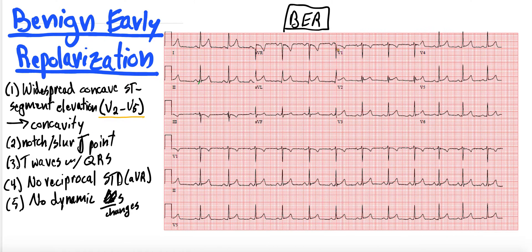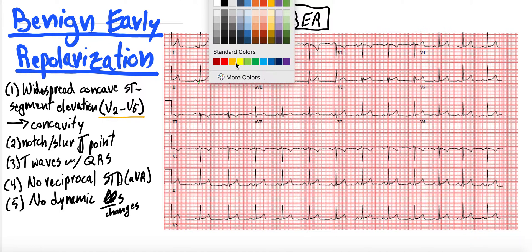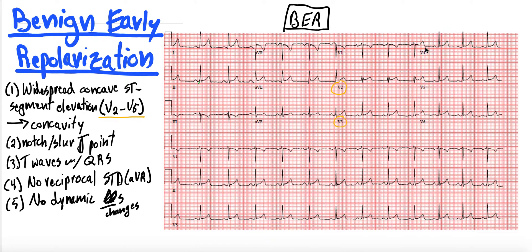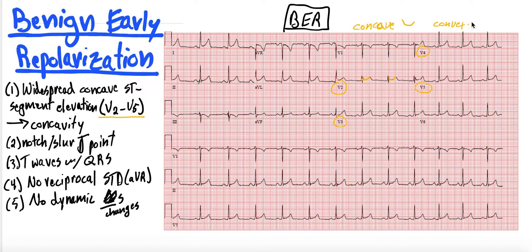We look at our criteria. Is there widespread concave ST segment elevation most apparent in V2 through V5? Let's start with V2 through V5 — that's V1. Let's start with V2, 3, 4, 5. And on this EKG in particular you can see this concave shape right here — I'll trace it. So it's concave. For those who don't know, concave looks like this, whereas convex looks like this. Convex is bad; concave is okay. So these ST elevations are concave, they're upsloping, which is reassuring.